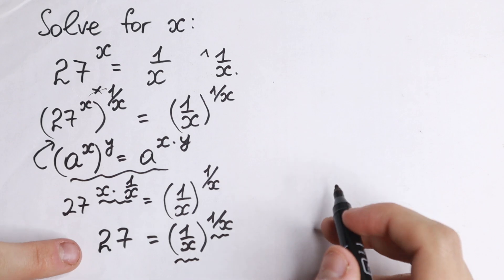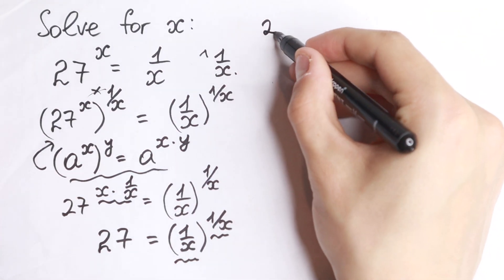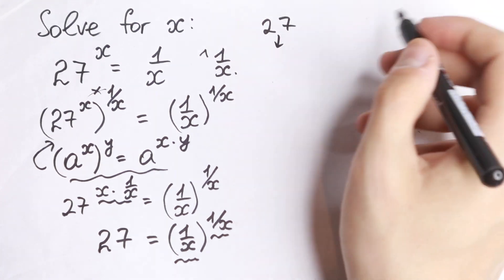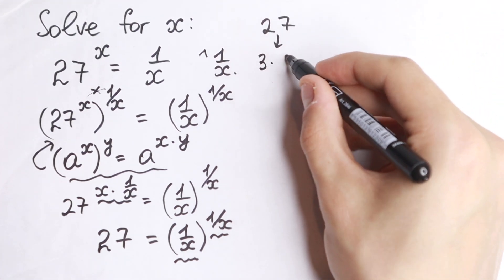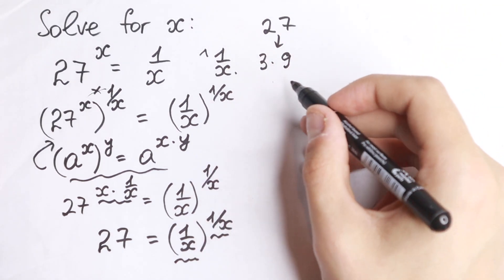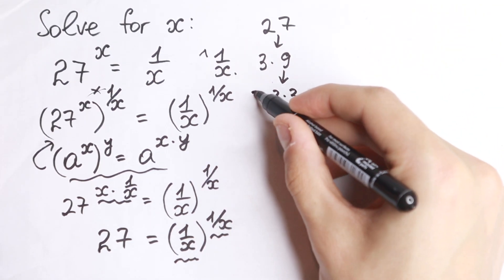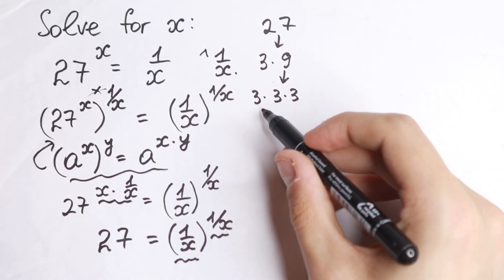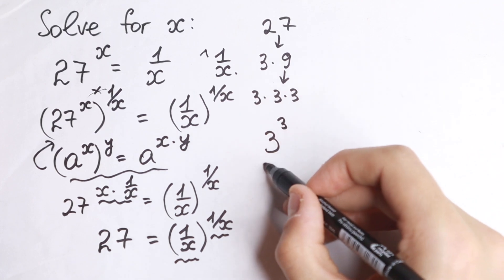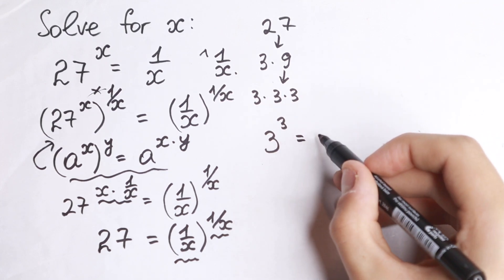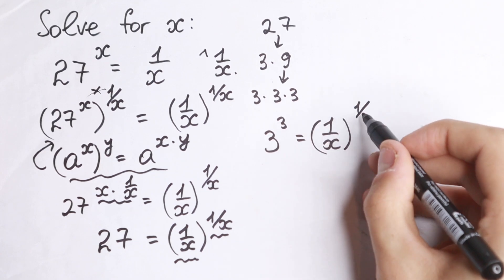On the left-hand side we have a really good number. This is not a prime number, so we can express 27. We can express it as 3 times 9, but let's go further: 9 is 3 times 3, so 3 times 3 times 3 gives us 3 cubed — same base and same exponent. And on the right-hand side we have 1 over x to the power 1 over x.